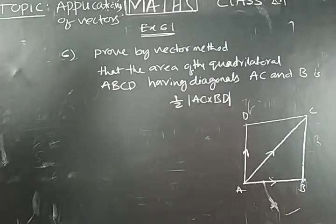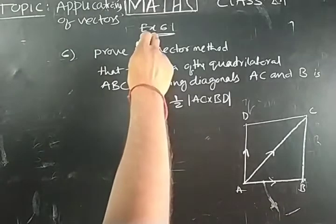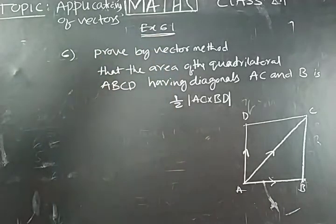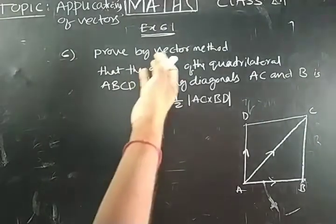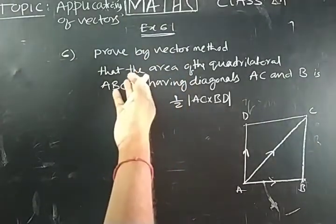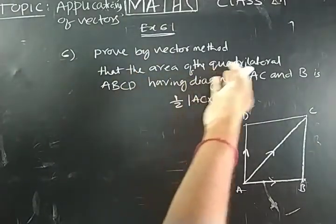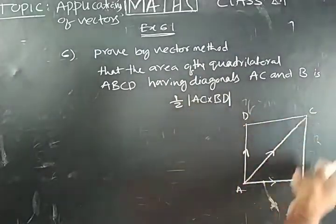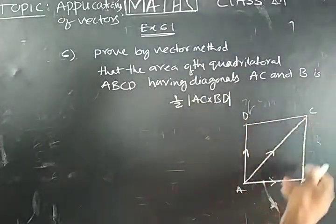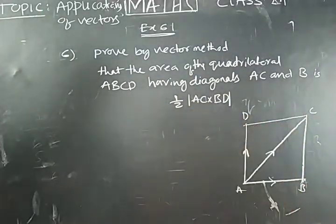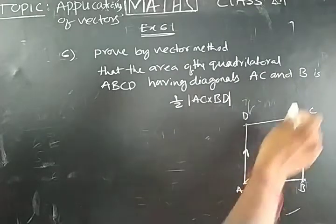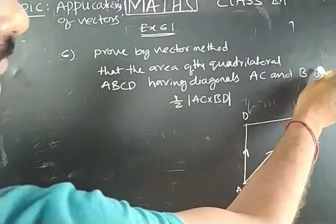Good afternoon students. Now in exercise 651, sixth problem, we are going to prove the area of the quadrilateral ABCD. I am taking ABCD quadrilateral having the diagonals AC and BD.